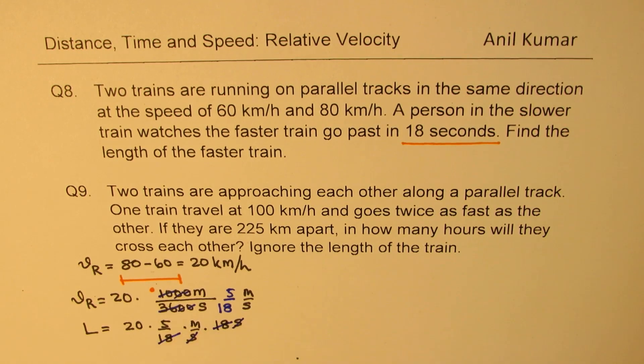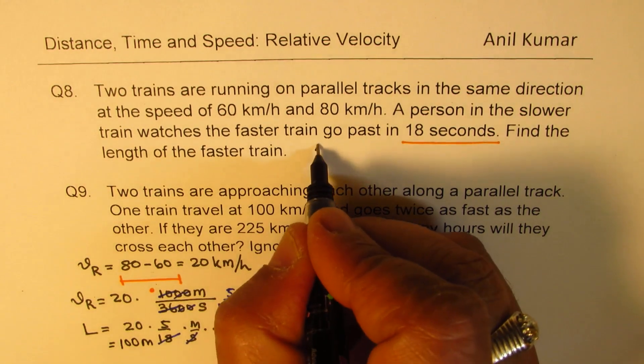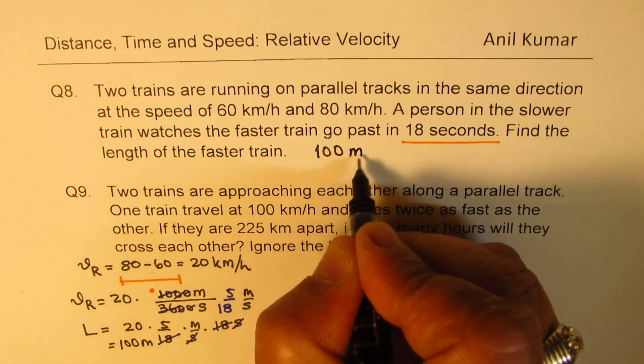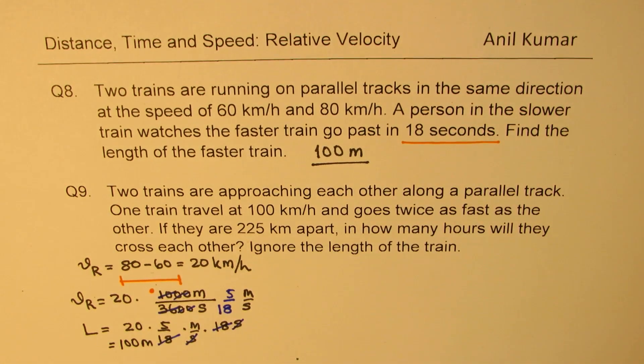18 and 18 cancel. These multiple choice questions take advantage of values for easier calculations. That clearly gives you a length which is 5 times 20 or 100 meters. So we get 100 meters as the length of the train.